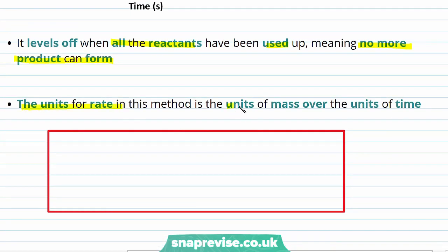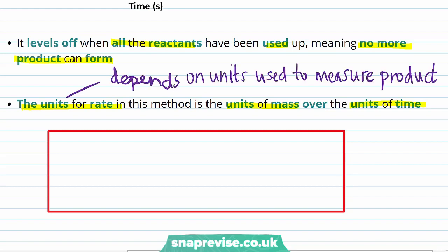As it's the units of mass which is changing and it's what we're measuring. In general, the units for rate will depend on the units used to measure the amount of product or reactant.